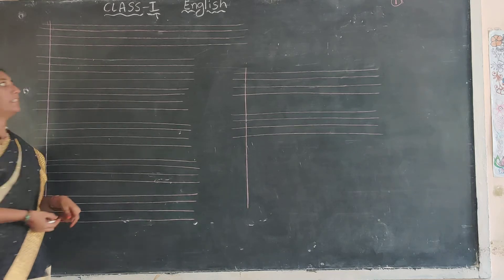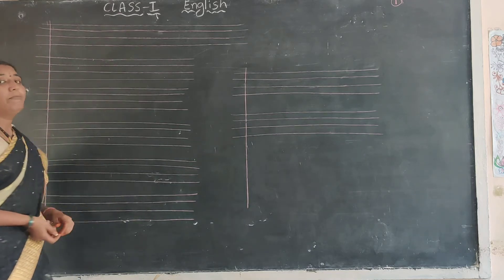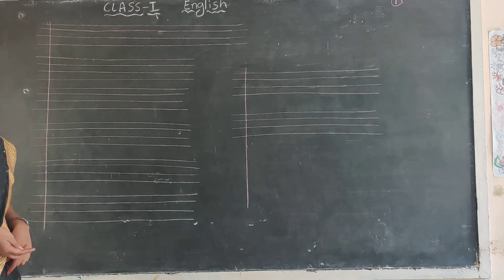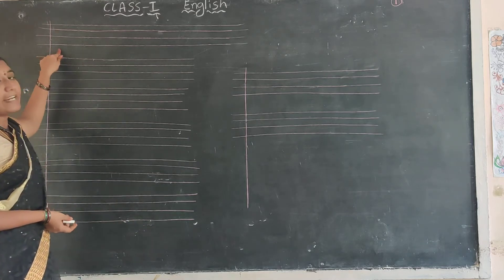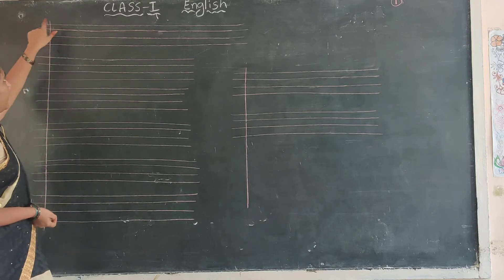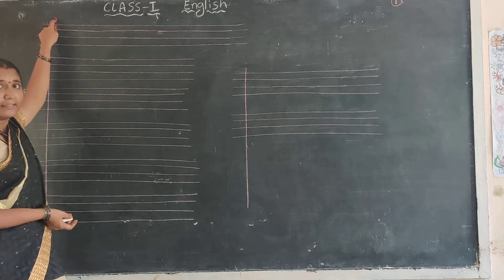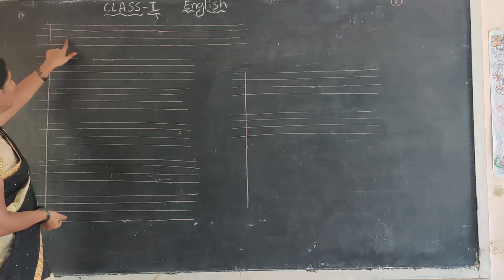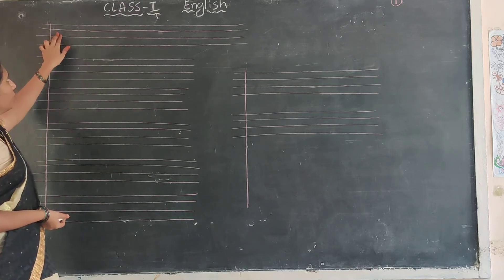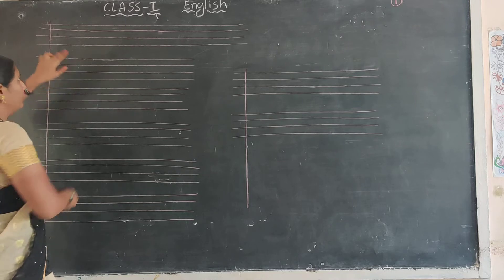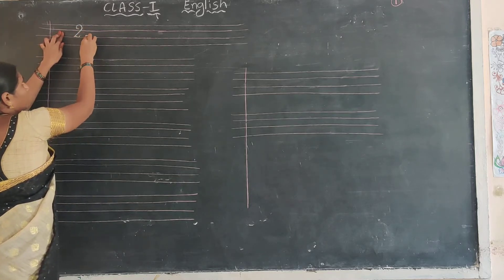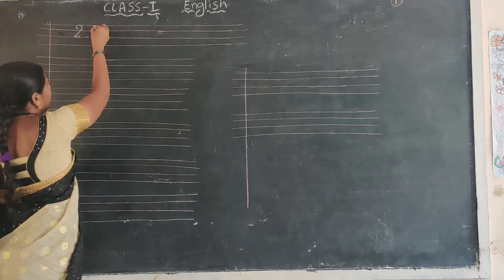The lesson name is Helpful Friends. This lesson starts on a new page. Write the date — the date is compulsory. And in the first line, after the margin, give two fingers gap. Write Lesson Number 2.